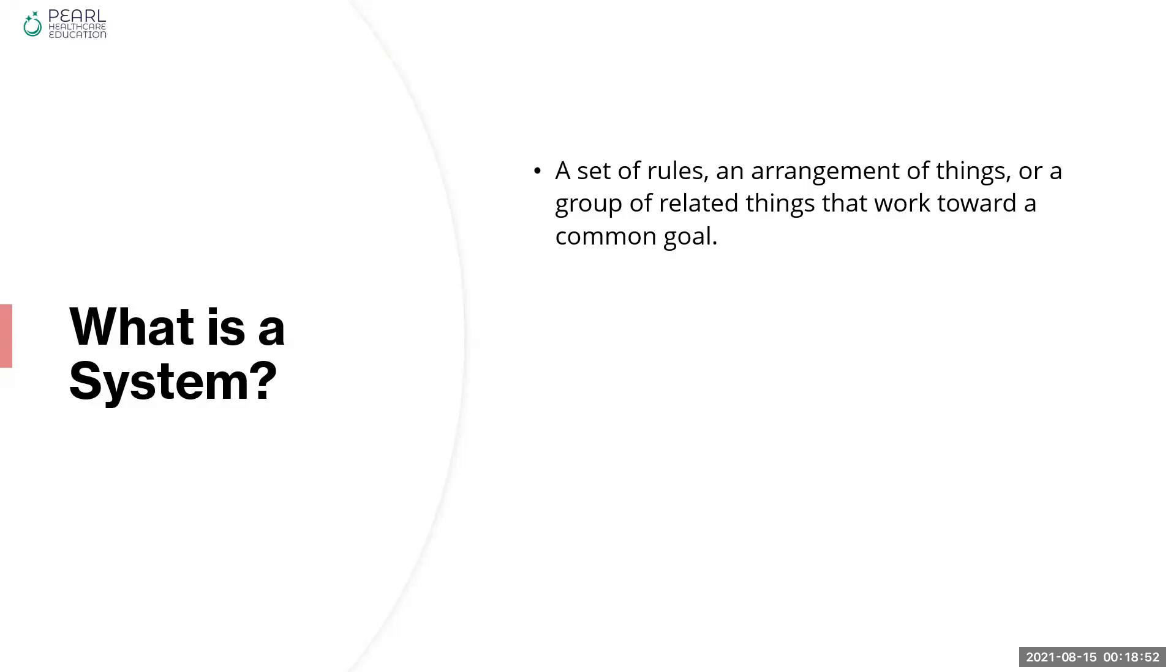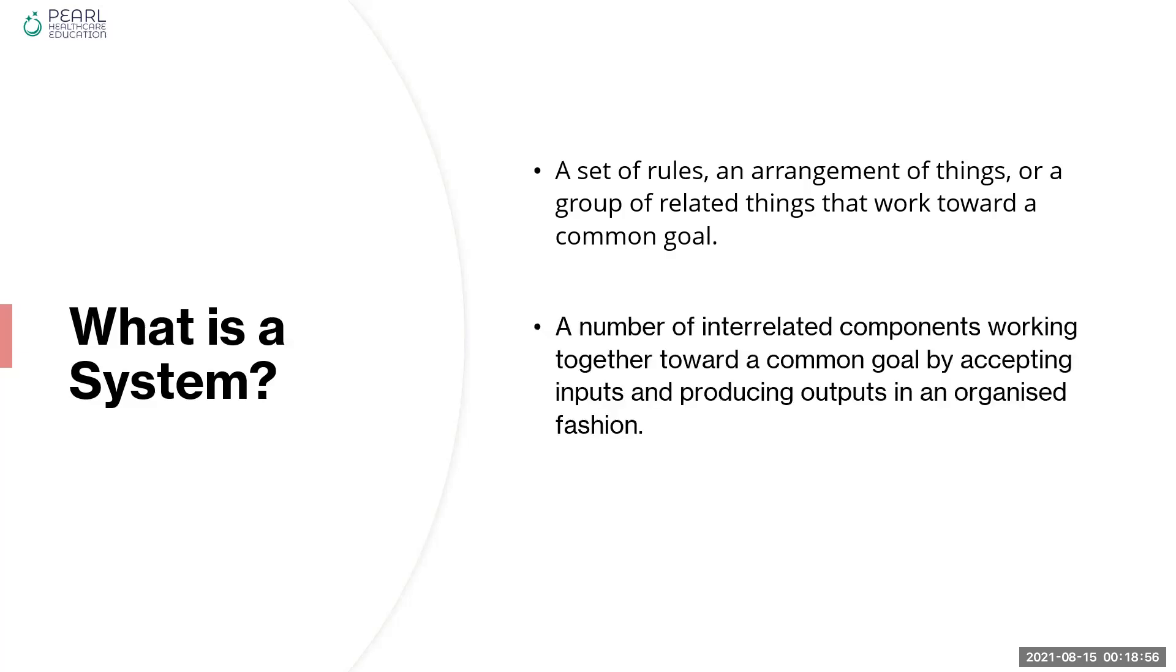So what is a system? A system refers to a set of rules, arrangement of things, or a group of related things that work towards a common goal. It can also be referred to as a number of interrelated components working together towards a common goal by accepting inputs and producing outputs in an organized fashion.